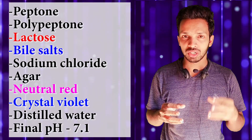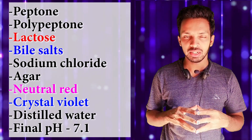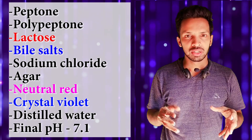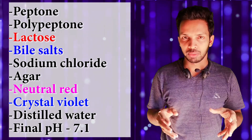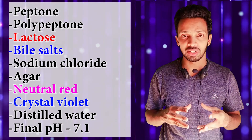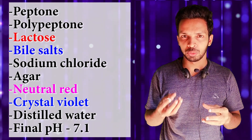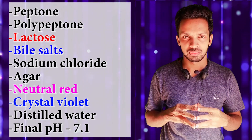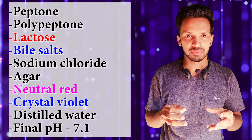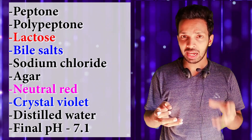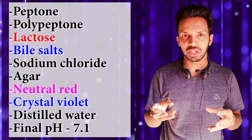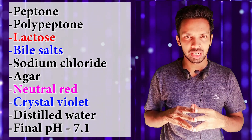When we talk about the composition of MacConkey agar, it contains peptone, polypeptone, bile salt, crystal violet, sodium chloride, agar, distilled water, neutral red, and the final pH should be 7.1. You have to remember bile salt, crystal violet, neutral red, and lactose. Bile salt and crystal violet inhibit the growth of gram-positive bacteria.